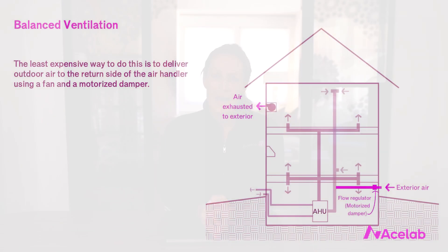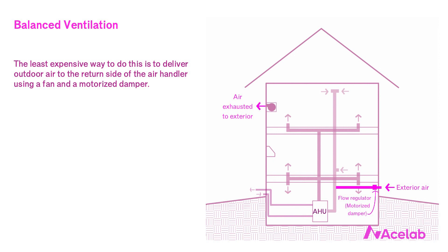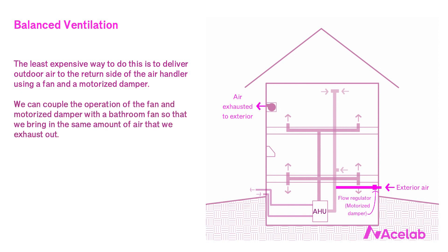You've probably already thought of a few good reasons why this approach is problematic. Mainly, we're not really sure where the exterior air is coming from or how clean it really is. The exterior air might also be uncomfortably or even dangerously humid, too hot, or too cold, and we're filtering it through our building enclosure. A nice alternative is balanced ventilation. The simplest approach is to deliver outdoor air to the return side of the air handler using a fan and a motorized damper, coupling its operation with a bathroom fan so we bring in the same amount of air that we exhaust out.